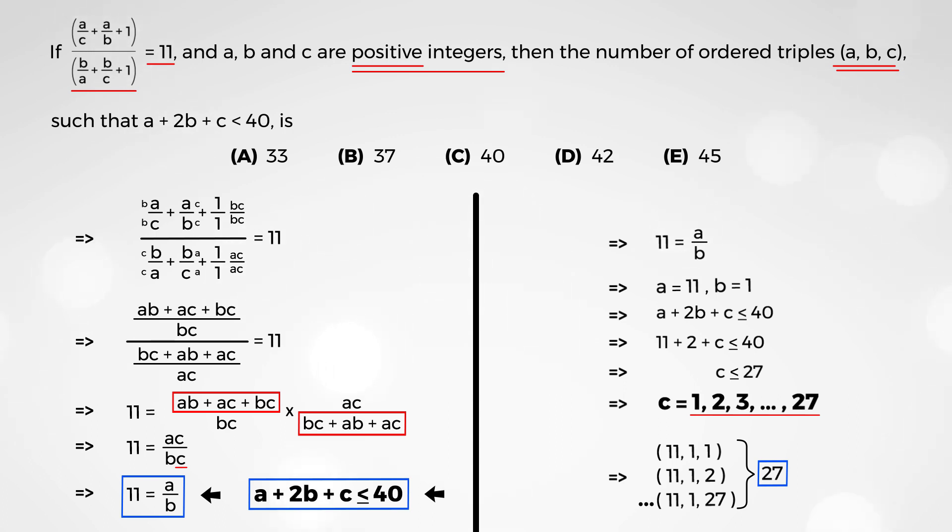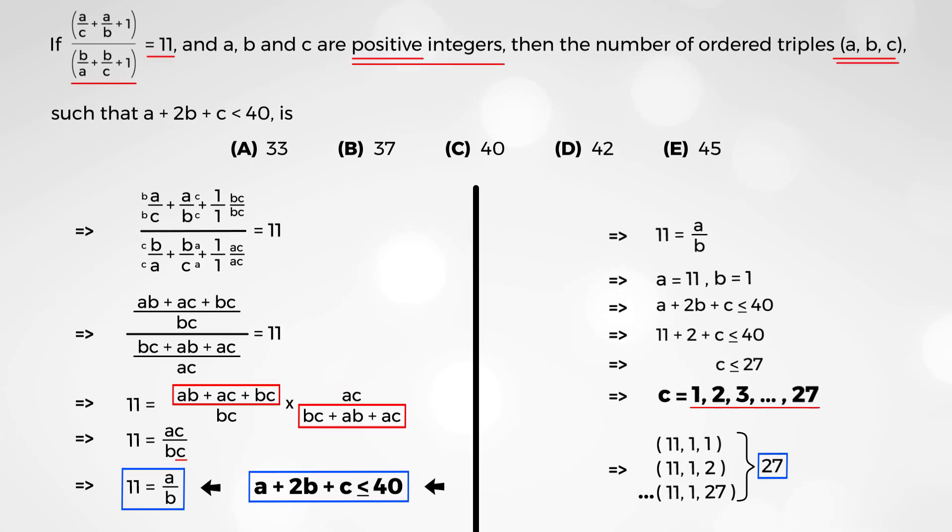Now, can we keep going? Can we get more? Perhaps. Let's see. Now, let's let a equal 22 and b equal 2. This will indeed satisfy this equation, which is a over b.